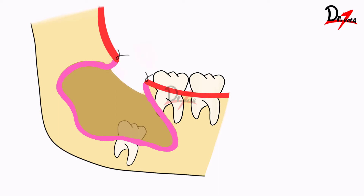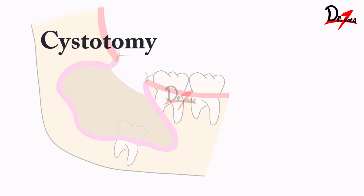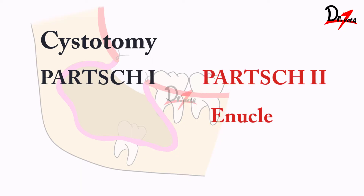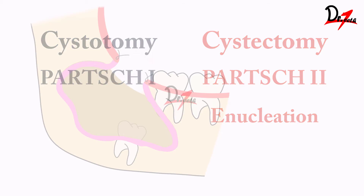Marsupialization is also known as cystotomy, and it is also known as PARSH-1 because it was described by PARSH in 1892. PARSH-2 is enucleation, also called cystectomy. We will learn about enucleation in a separate video, but for now let's concentrate on marsupialization.